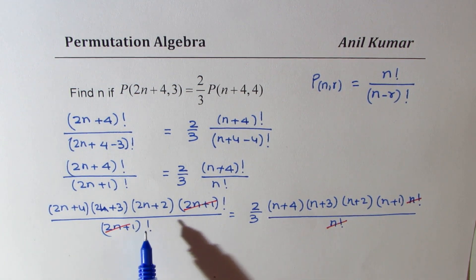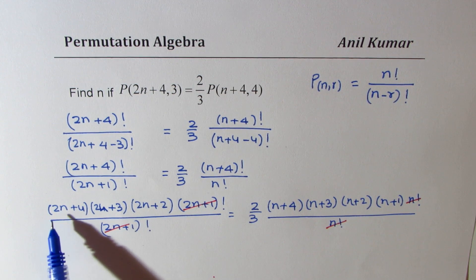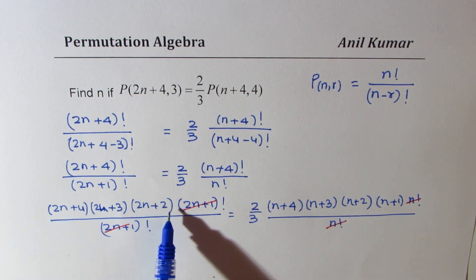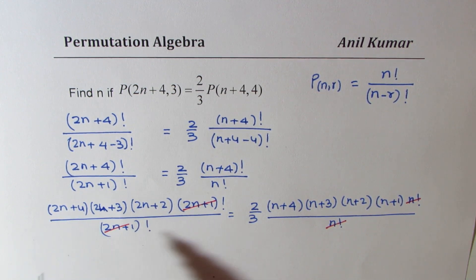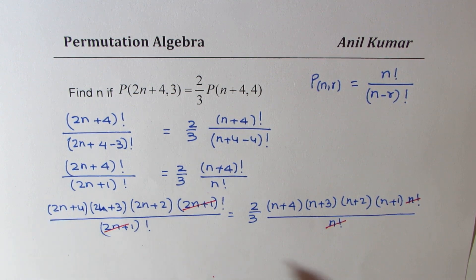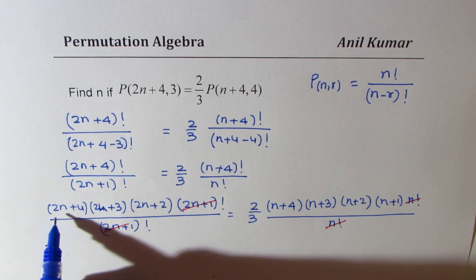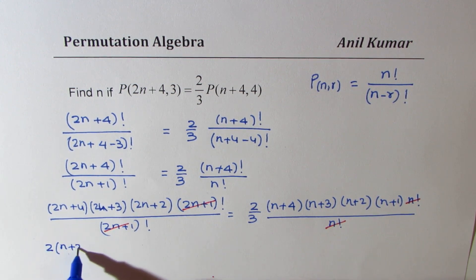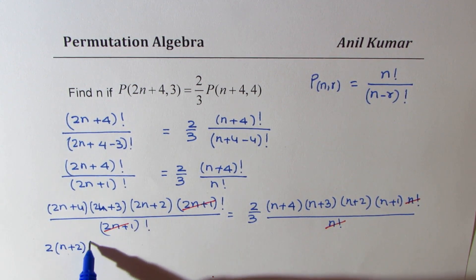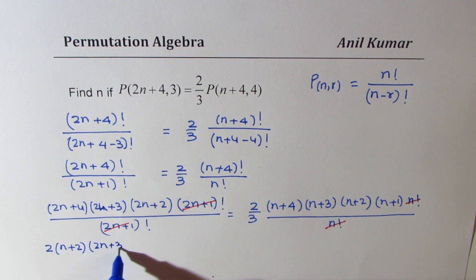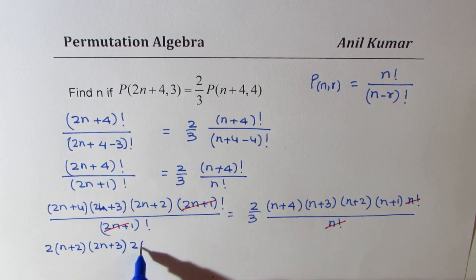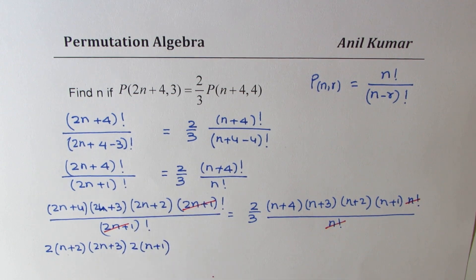Now to solve further, you will notice that we have 2n+4 and 2n+2. So you can factor out 2. That is a key step here. If you factor out 2, you get 2(n+2) in the first term. Here, we'll just keep it as 2n+3. Again, we can factor out 2, get (n+1).